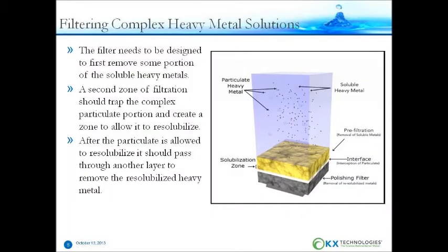A filter to remove complex species needs to be designed in a specific way. It must be designed to first remove some portion of the soluble heavy metal, then have a surface where the particulate can be trapped and held, creating a zone where the particulate can go back into solution. Afterwards, the solution should pass through a third zone that can remove any of the soluble heavy metal left in solution.